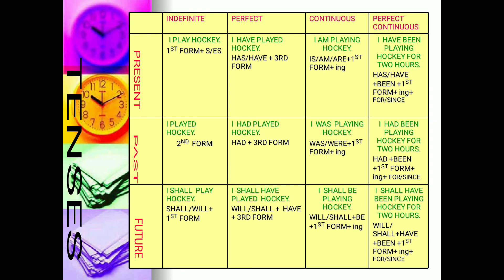Now coming to the present perfect continuous. We know perfectly when it was continuous, with respect to the present point of time. So: I have been playing. For perfect, 'have' has to be used; for continuous, 'ing' has to be used. But with 'have,' the third form must be used — so we insert 'been.' Be, was, been — 'been' is the third form. So: I have been — and then the main verb with 'ing': playing. So: I have been playing hockey.